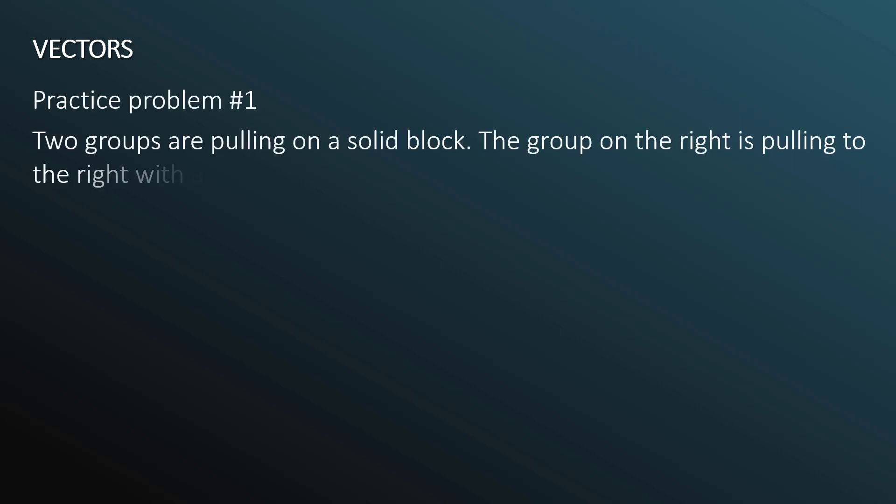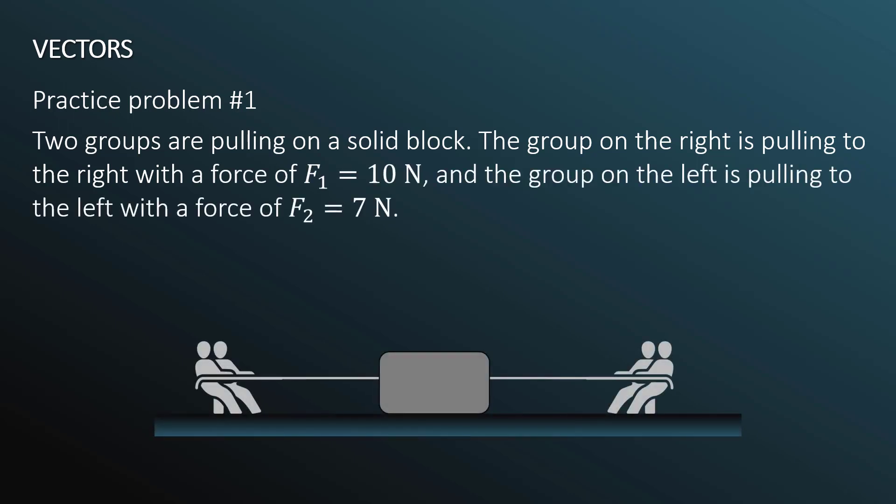Let's do an example problem. Practice problem number one. Two groups are pulling on a solid block. The group on the right is pulling to the right with a force of f1 equals 10 newtons, and the group on the left is pulling to the left with a force of f2 equals 7 newtons. Let's look at how I wrote these quantities. Notice that I did not write f1 or f2 in boldface font, because I'm only giving the value of the force here.